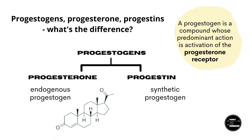Let's start off with terminology. The three terms progestogen, progesterone, and progestins are easy to mix up. A progestogen is a compound whose main action is activation of the progesterone receptor. Note that most progestogens also interact with other steroid hormone receptors, which I will go into in a minute.